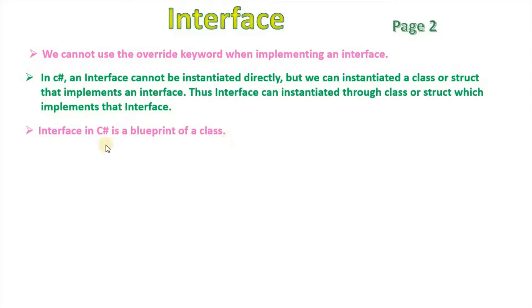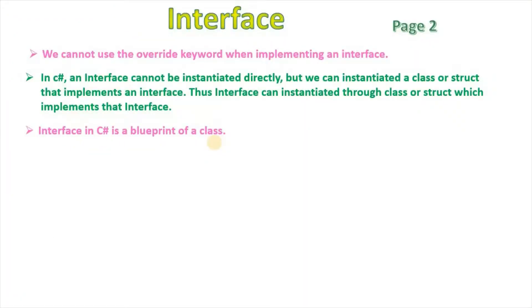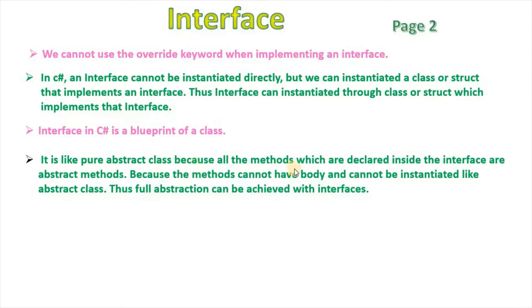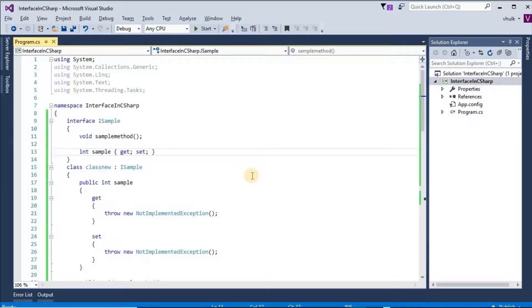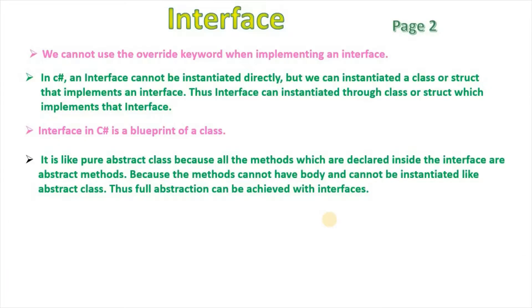Interface in C# is a blueprint of a class. In an interface, we can declare all the methods which we want the classes to implement. It is like an abstract class because all methods declared inside the interface are abstract — they cannot have a body and cannot be instantiated. Thus full abstraction can be achieved with interfaces, unlike abstract class where there may be both abstract and non-abstract methods.